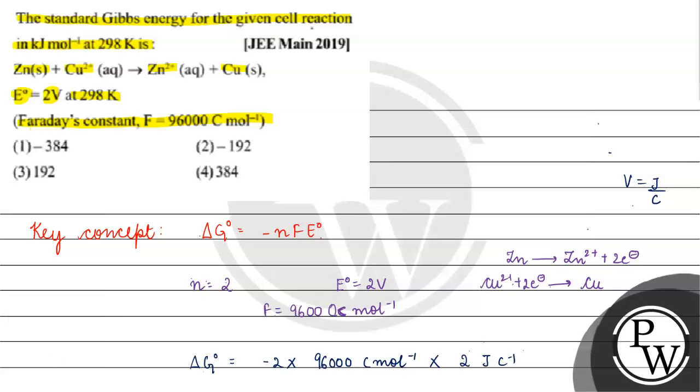Now, what will happen? We have volt here as Joule per Coulomb. The Coulombs will cancel out.